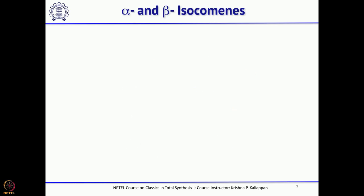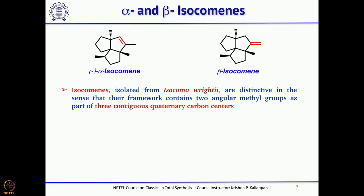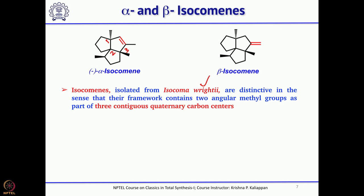Today we will talk about the total synthesis of alpha- and beta-isocomane. These isocomanes were isolated from Isocoma wrightii, and a closer look at these molecules shows that there are 3 contiguous quaternary centers. Construction of quaternary carbons is not easy, and particularly constructing them stereoselectively is a really tough job.